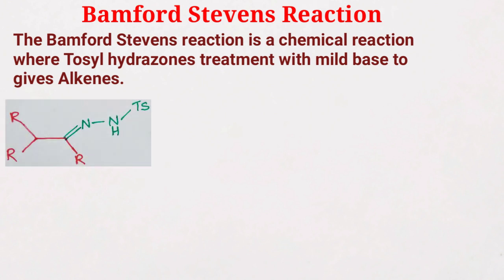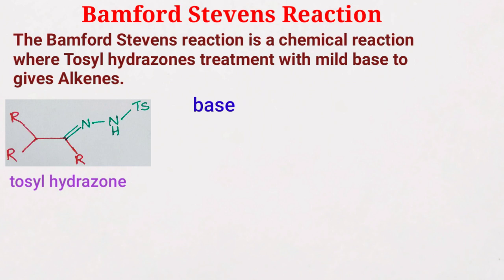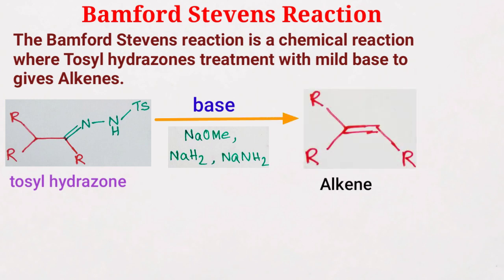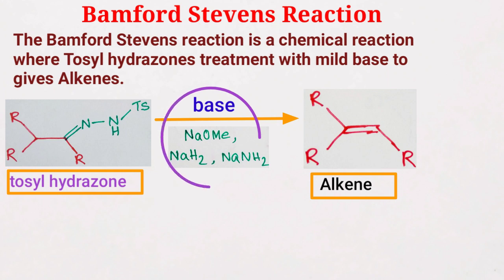This is the tosylhydrazone, and after treatment with base under mild basic conditions, the most commonly used bases are sodium methoxide, sodium hydride, or sodium amide. Finally, this tosylhydrazone is converted to an alkene product. So this is a very well-known reaction where tosylhydrazone is converted to alkene in the presence of mild basic conditions.